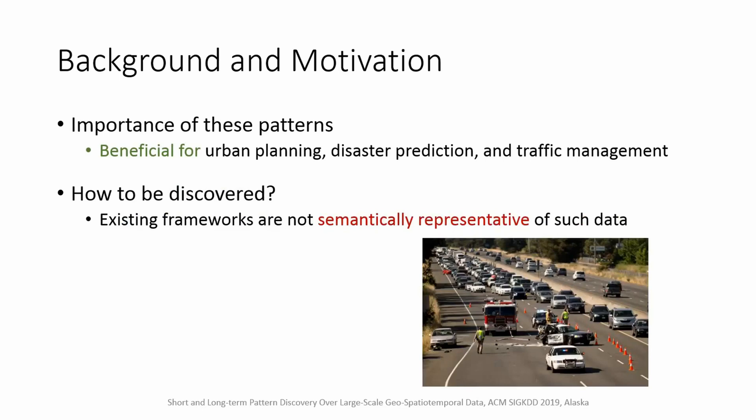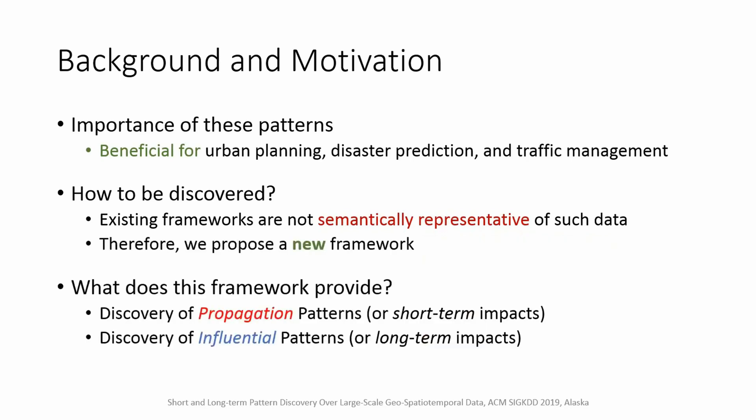For instance, a traffic accident on a specific lane in a highway usually has no impact on the opposite lane, while existing frameworks may project both lanes to the same location. Thus, we need a specific definition for co-location and even co-occurrence. We propose a new framework to address these challenges and discover two types of patterns: propagation and influential.